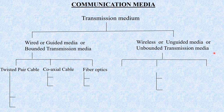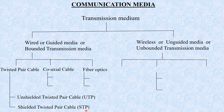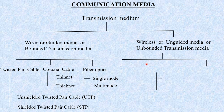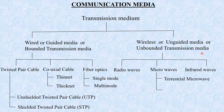Twisted pair cable is of two types: Unshielded Twisted Pair (UTP) and Shielded Twisted Pair (STP). Coaxial cable is of two types: Thin net and Thick net. Fiber optics are of two types: Single mode and Multi mode. Wireless media are of three types: radio wave, microwave, and infrared wave. Microwave is further of two types: Terrestrial microwave and Satellite microwave. We are going to study each of these in detail, including their working, advantages, disadvantages, and applications.